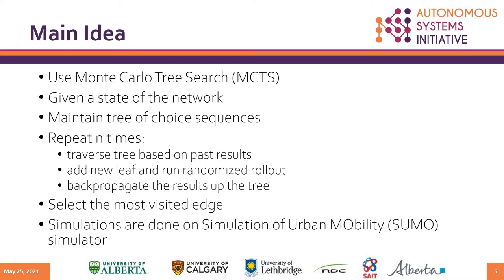The main idea is to use Monte Carlo Tree Search, which is an iterative tree search algorithm that maintains a tree of choice sequences. We traverse the tree based on previous results until we reach a leaf node, and then we perform random simulation. Upon getting the simulation result, we back-propagate up the tree to update the node and edge statistics. This is done n times and then the most visited edge is chosen.